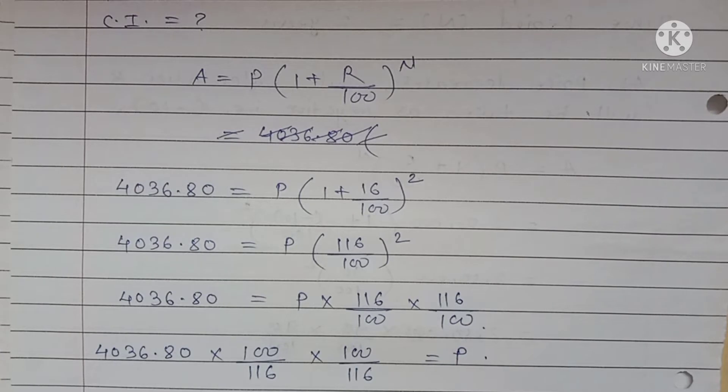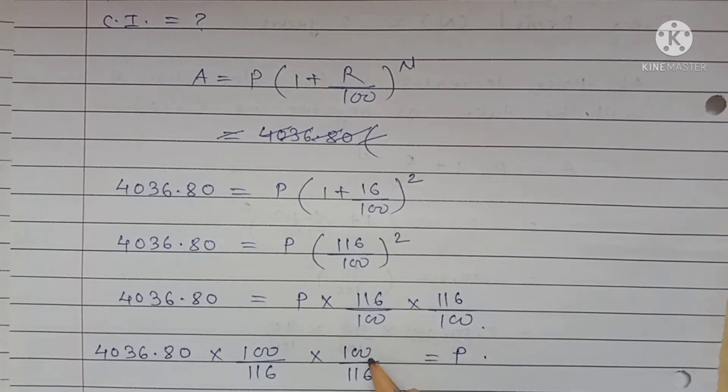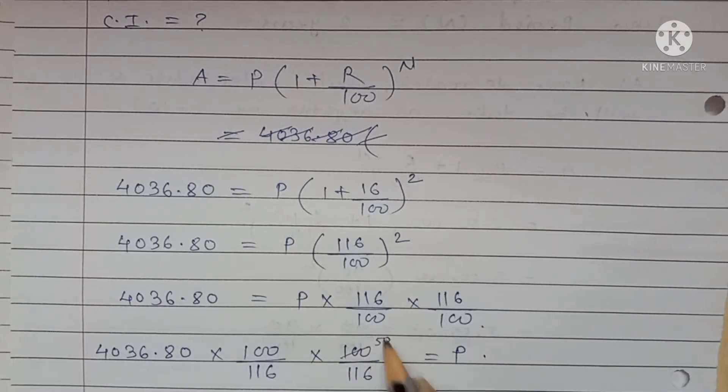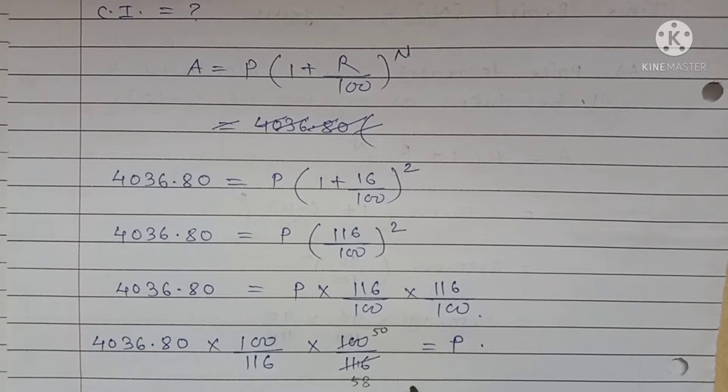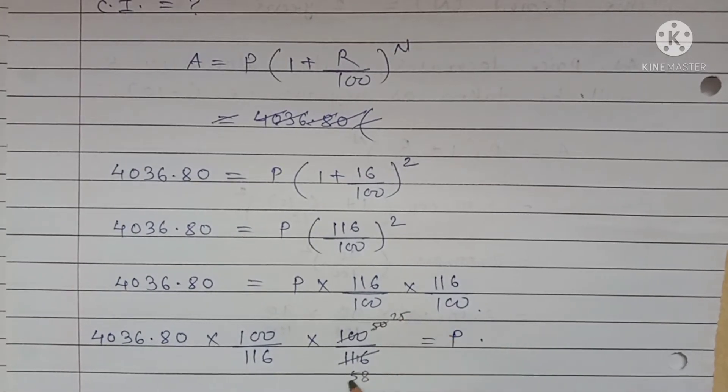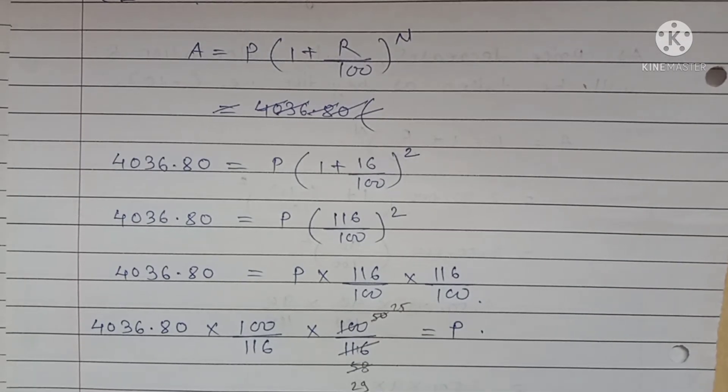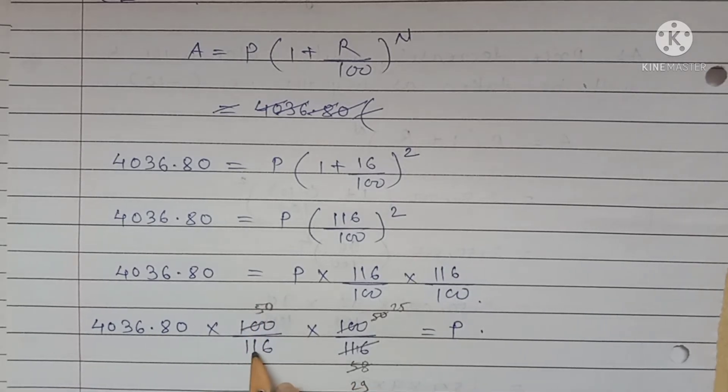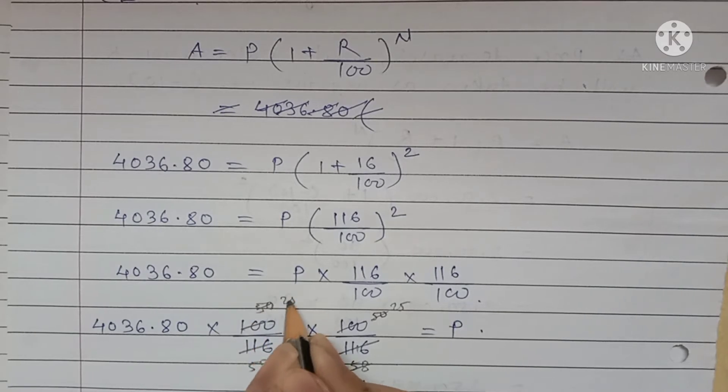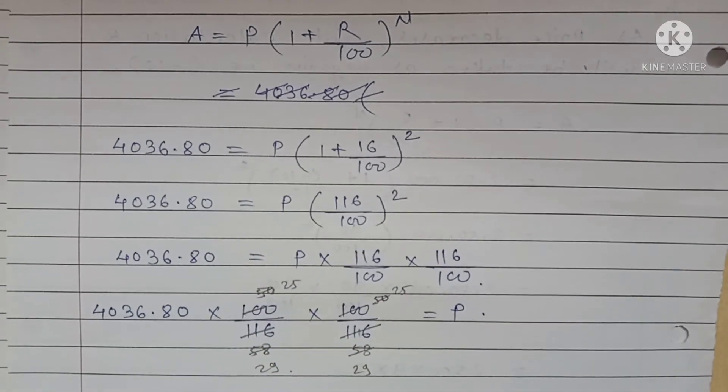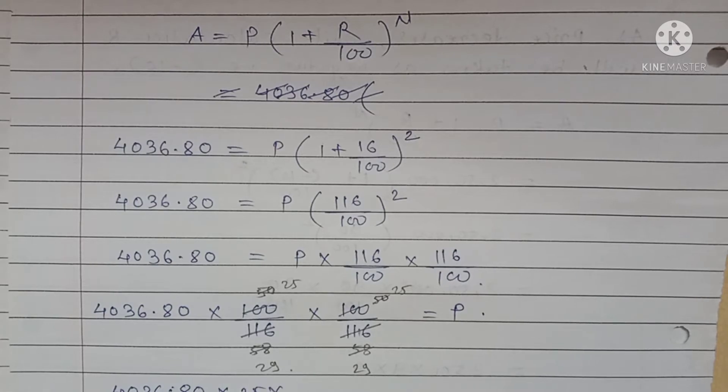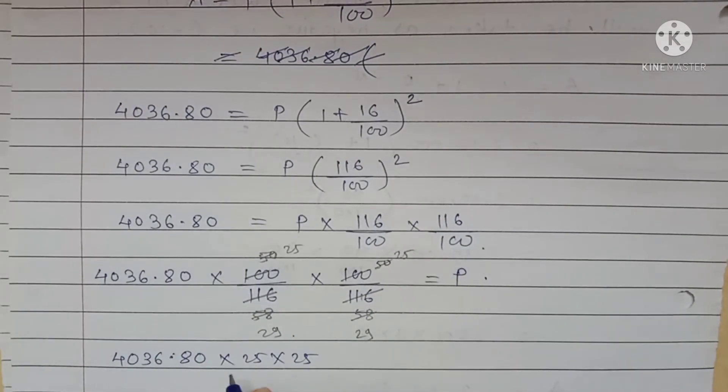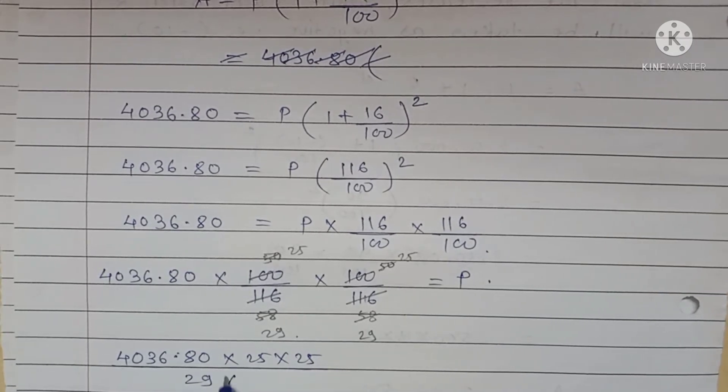Now, here, divide by 2. Suppose I am dividing by 2. Again divide by 2. Means here 25 upon 29. Then 4036.80 x 25 x 25 upon 29 x 29.